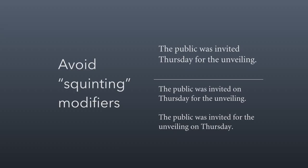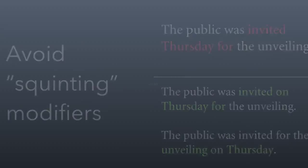You also need to avoid squinting modifiers. A modifier is squinting when it could modify multiple parts of the sentence in a confusing way. For example: 'The public was invited Thursday for the unveiling.' 'Thursday' is the modifier, but we don't know if it modifies 'invited' — meaning the day the public was invited — or 'unveiling' — meaning the unveiling takes place on Thursday. We rewrite it as 'The public was invited on Thursday for the unveiling,' or 'The public was invited for the unveiling on Thursday,' so the modifier clearly modifies the correct part.